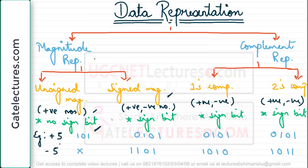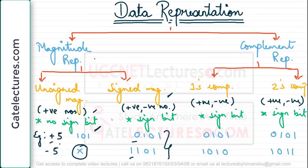For example, suppose you have to represent plus 5. You know that 5 is written as 101 in binary. So 101 is the unsigned magnitude representation of plus 5. Since we can only represent positive numbers, there is no representation for minus 5 in unsigned magnitude representation. In signed magnitude representation, for plus we put a 0, for minus we put a 1. The magnitude is the same in both cases. Then we come to complement representation — you have already seen how to find R's complement and R minus 1's complement.